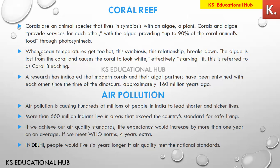Coral bleaching occurs when ocean temperatures get too hot — the symbiosis breaks down, the algae is lost from the coral, and the coral loses its color and appears white. Without the algae, the coral effectively starves. This process is called coral bleaching. It is caused by rising ocean temperatures due to global warming.